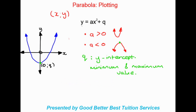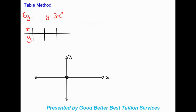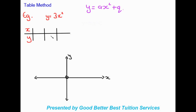Now that we know some basics about our parabola, let's move on to some plotting examples. The first method we're going to look at is the table method. In this example we are given the equation y is equal to 3x squared. Recalling the equation y equals ax squared plus q, what we are missing here is the q. We have 3 representing a. In examples where we have a q missing, it is most suitable to use the table method. We set up a table with x values on top and y values at the bottom, using x values of negative one, zero, and positive one.